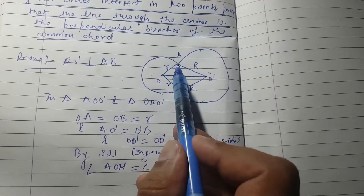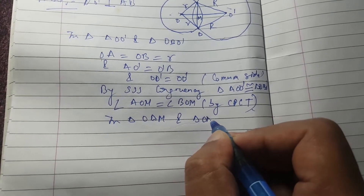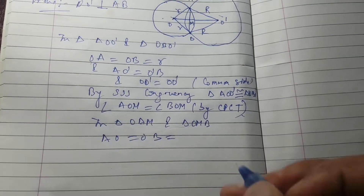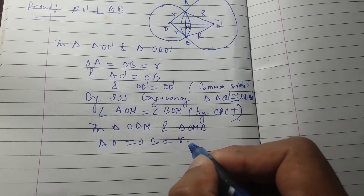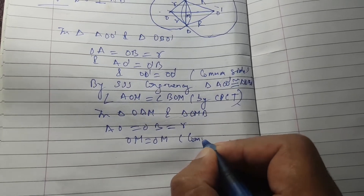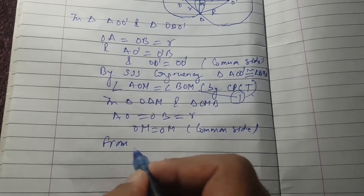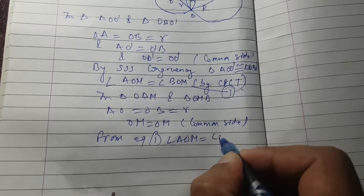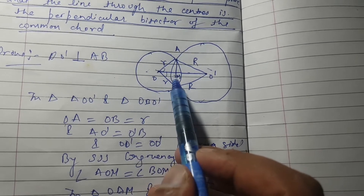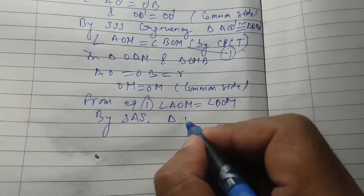Now we take the two smaller triangles: triangle OAM and triangle OMB. In these triangles, OA is equal to OB — both are radii of the smaller circle, equal to r. OM is equal to OM, which is our common side. And from equation 1, angle AOM is equal to angle BOM.